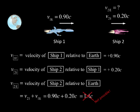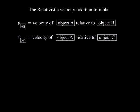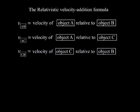The relativistic velocity addition formula addresses this problem. Suppose VAB stands for the speed of object A relative to object B, VAC stands for the speed of object A relative to object C, and VCB stands for the speed of object C relative to object B.